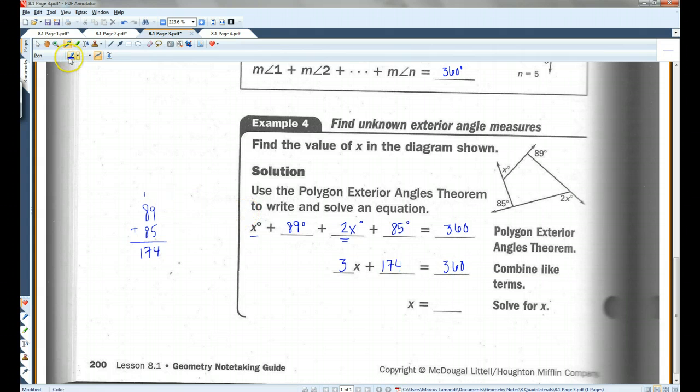And now I'm going to subtract. 186. And I actually kind of skipped a step in here. You have 3x equals 186. Divide both sides by 3. 3 goes into 18 six times. Goes into 6 twice. So x equals 62. All right, let's go on to the last page.